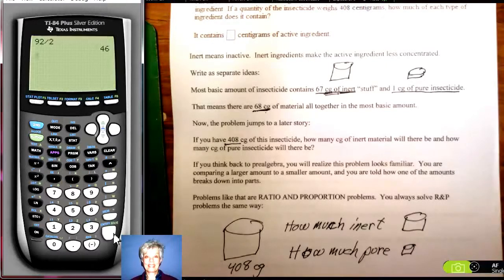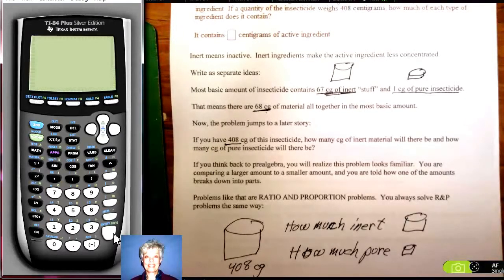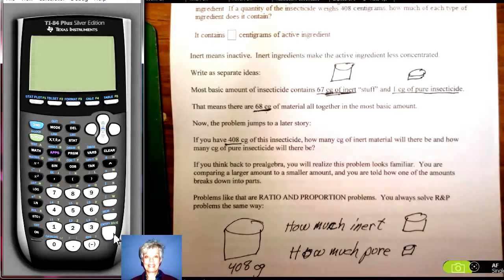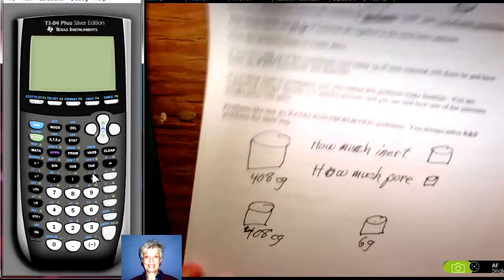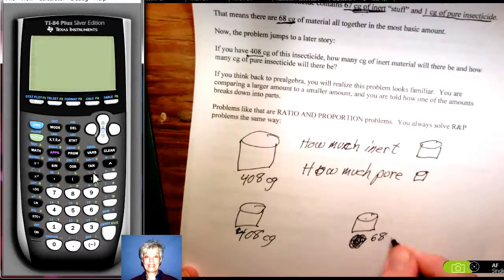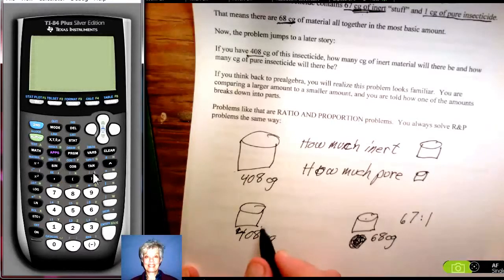So what we have here is we have a total of 408 centigrams and we have a total of 68 centigrams. We know how this is divided up 67 to 1. We need to find out how this is divided up.